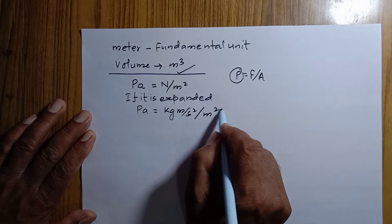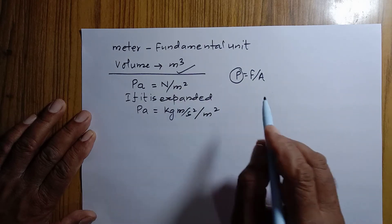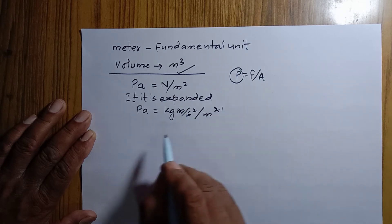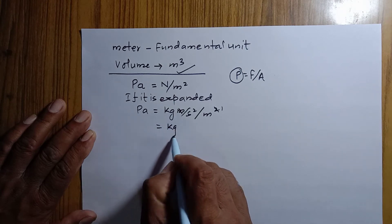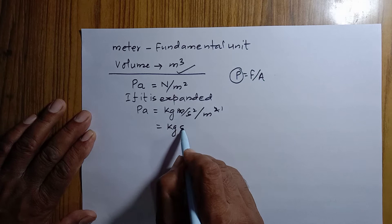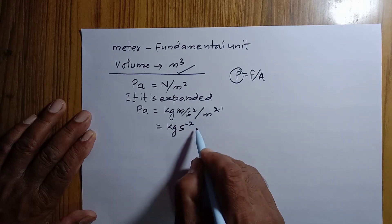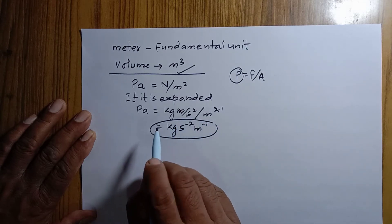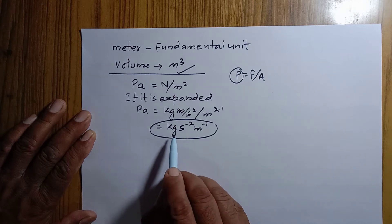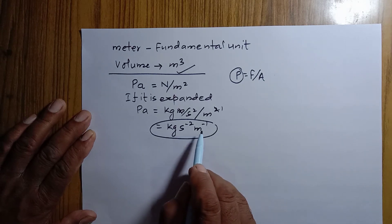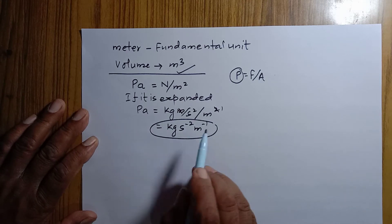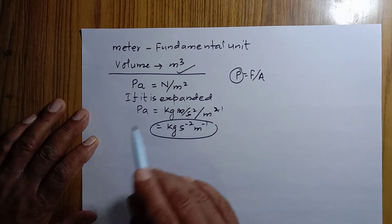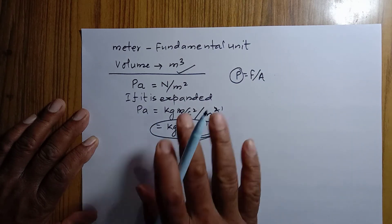Continuing the expansion: Pascal equals kg·m/s² divided by m². One meter cancels, giving kg·m⁻¹·s⁻². Thus, the fundamental units kilogram, second, and meter combine to make the unit Pascal. Since a unit expressed in terms of fundamental units is called a derived unit, the unit of pressure is a derived unit.